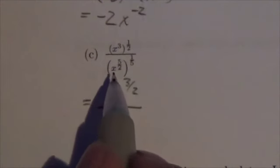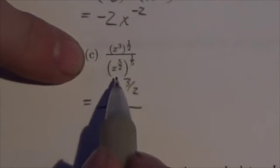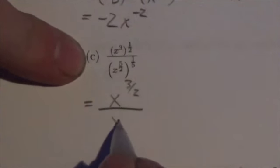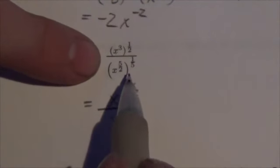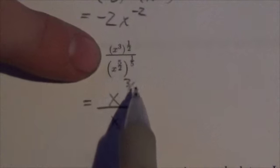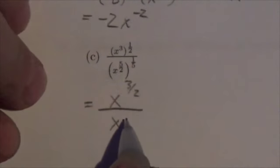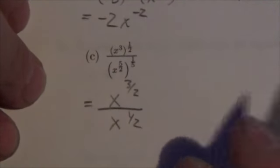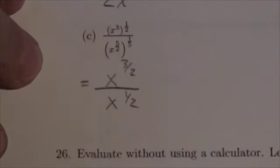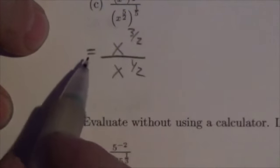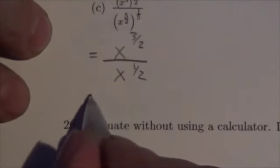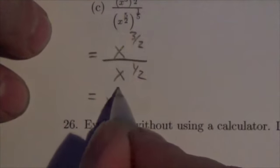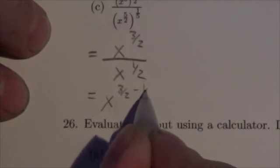In the denominator, again, power of a power. So this is going to end up being x to that. Now watch this. This is kind of convenient. 5 halves times 1 fifth. Well, the 5's cancel and you're just left with 1 half. So now I've got power divided by power. I know that that means I'm going to subtract the exponents. So 3 halves minus 1 half.